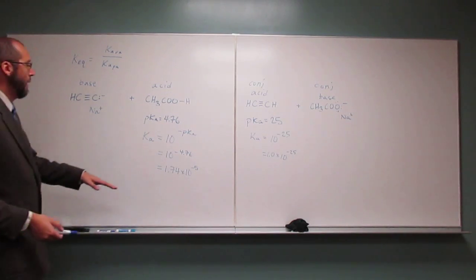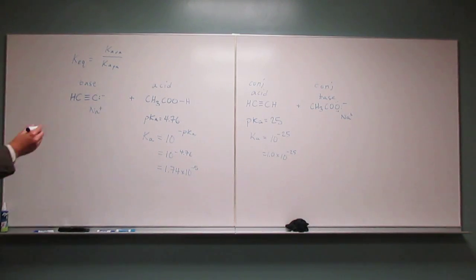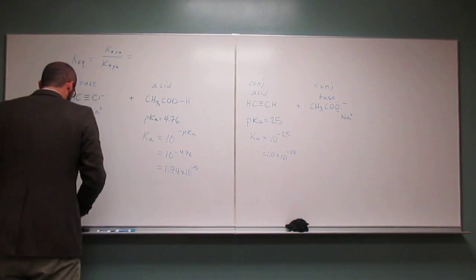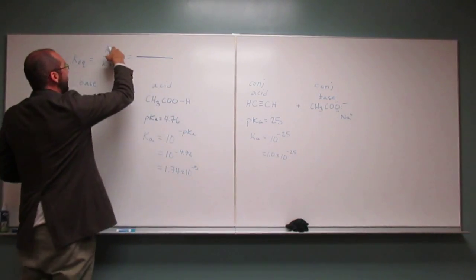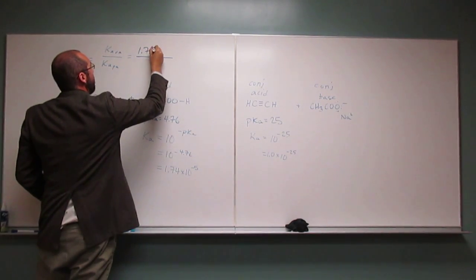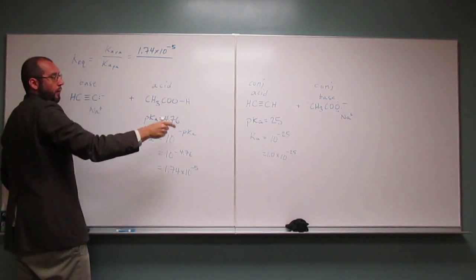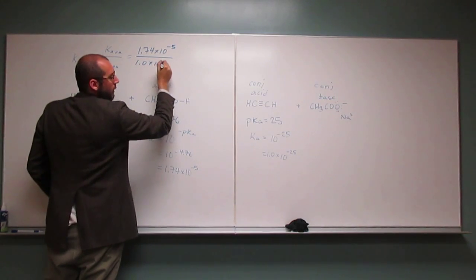So hopefully now it's fairly evident that we can get the Keq from this point. So let's just get that Keq. The Ka of the reactant acid, 1.74 times 10 to the negative 5. Ka of the product acid, 1.0 times 10 to the negative 25.